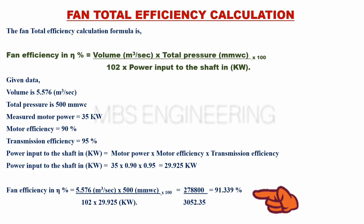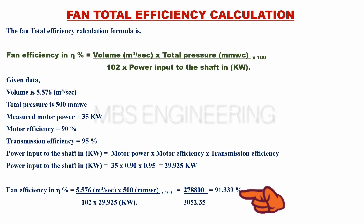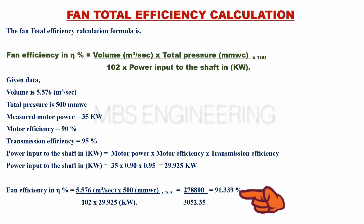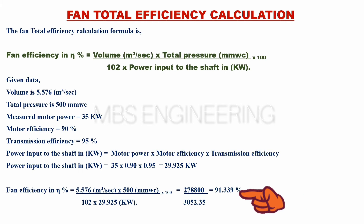The fan total efficiency eta equals 5.576 cubic meters per second multiplied by 500 mmWC, multiplied by 100, divided by 102, into 29.925 kilowatts — giving 278,800 divided by 3052.35. Based on the given data, the obtained total efficiency of the fan is 91.399%.